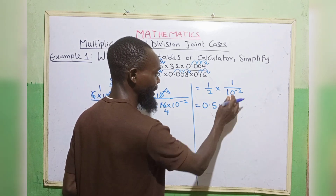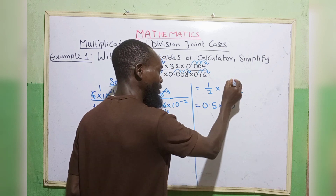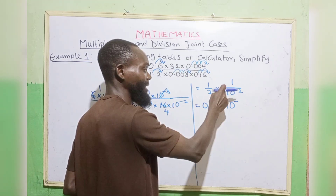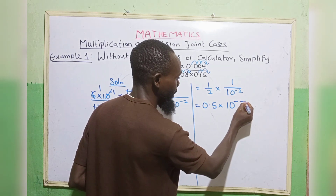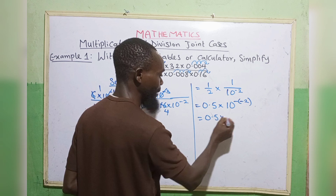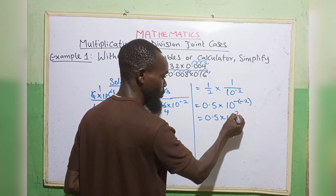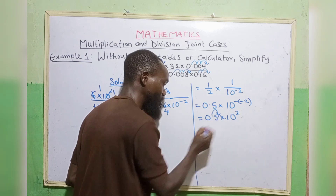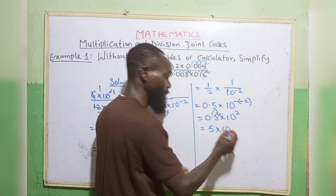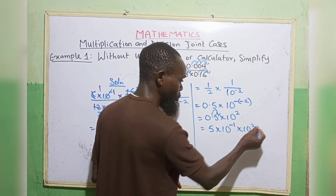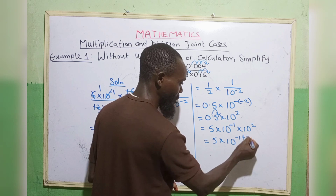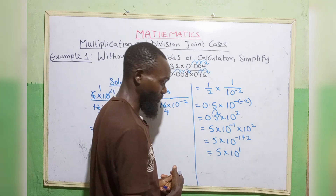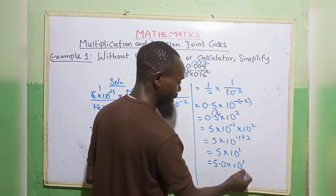So 1 divided by 2 is 0.5, multiplied by 10 to the power minus 2. Now, in indices, 1 over something changes to a negative power, and a negative power changes back to 1 over. So we now have minus 2. We have 0.5 times 10 to the power minus 2, which means minus plus, that is, the power becomes positive 2. Our decimal point must be at the back of the first non-zero digit, so we move to get 5 times 10 to the power minus 1, then times 10 to the power 2. So we have 5 times 10 to the power minus 1 plus 2, which equals 5 times 10 to the power 1. This is the standard form — equivalently 5.0 times 10 to the power 1.